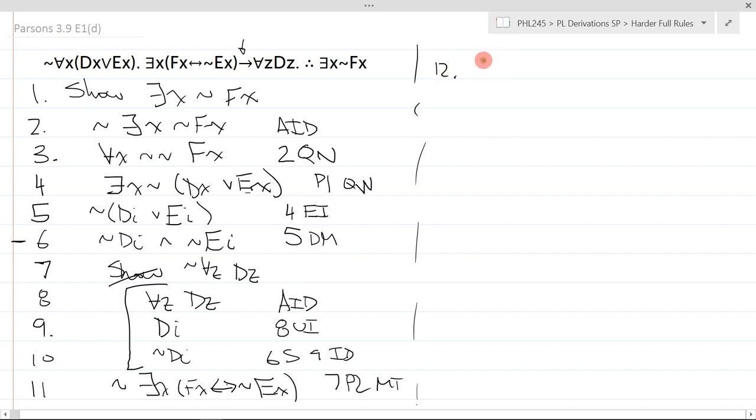On line 12, I will immediately quantify or negate that to get this. Now at this point, I just need to figure out what I'm going to UI to. That's pretty much how the proof is going to end. And I'm looking for guidance. Do I have any Fs pinned? Do I have any Es pinned?